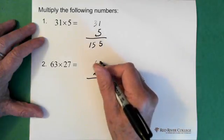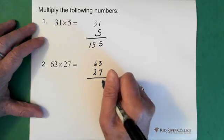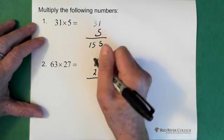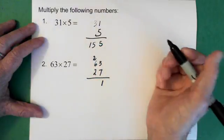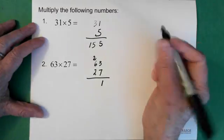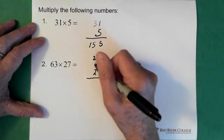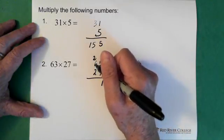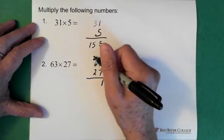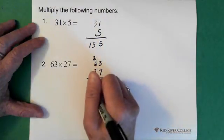So I'll take the 7, multiply it by the 3, and that gives me 21. So the 1 goes down here and the 2 goes above the 6. Then I take the 7, multiply it by the 6, which is 42, and I add the 2, which gives me 44.